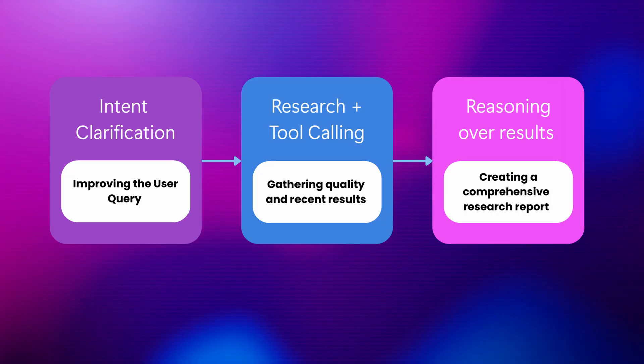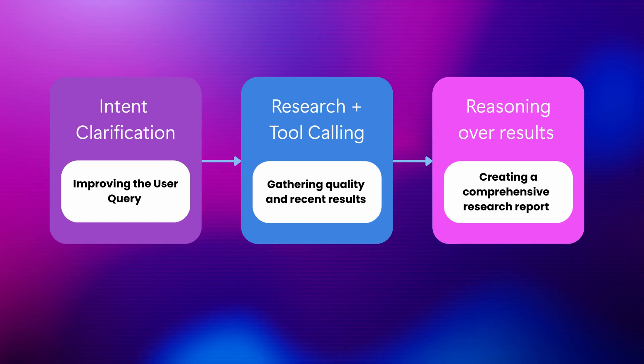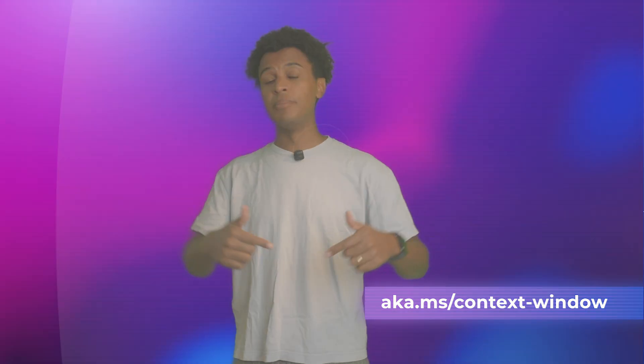Once the search results are retrieved, the agent can read and reason through the content of each of the sources, and then delivers a comprehensive report with citations, transparent by showing the reasoning paths it took to develop the research. That's how it works at a high level, but it's best to do your own research by using it yourself — you can find the resources to do so at the link below.